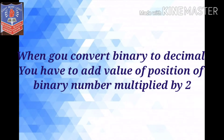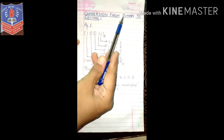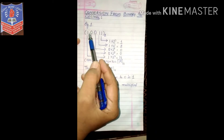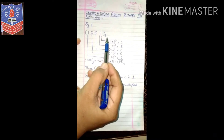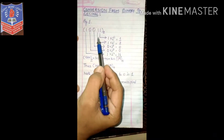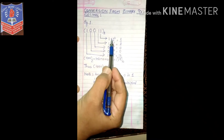Now let us learn conversion of binary number to decimal number. When you convert binary to decimal, you will have to add the value of the position of each binary digit multiplied by 2. We will learn this through an example. We are converting the number 10011, which is a binary number base 2, to the decimal number system. We have to multiply the position of each digit accordingly.